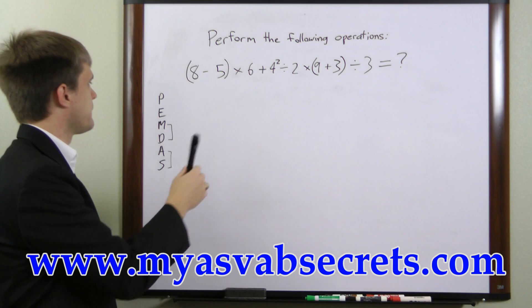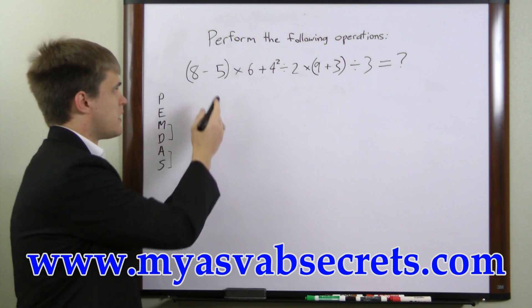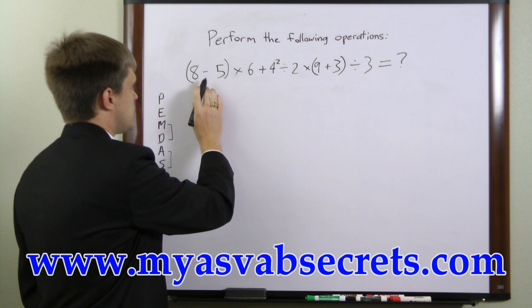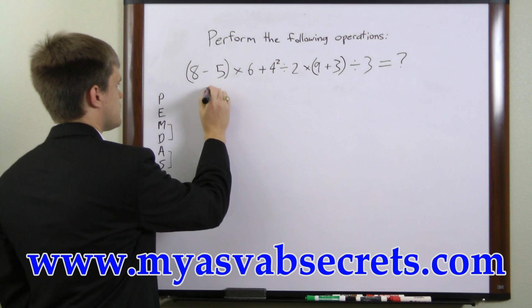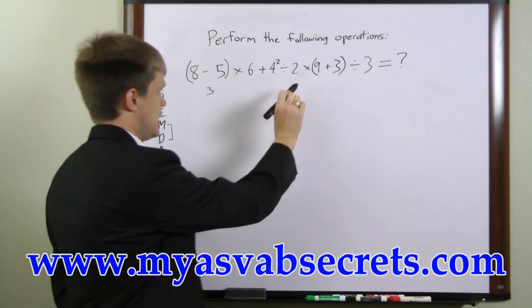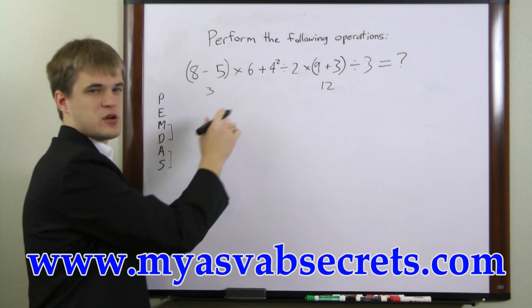Let's look at the example here. First thing we're going to look for is parentheses. We have two sets of parentheses and so we need to resolve them first. 8 minus 5 equals 3 and 9 plus 3 equals 12. So we resolved our parentheses.